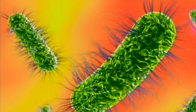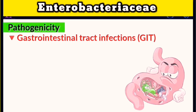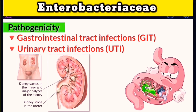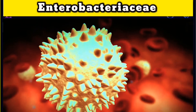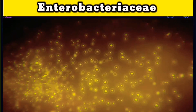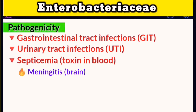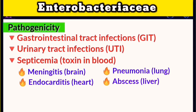Infections caused by Enterobacteriaceae mostly occur in the gastrointestinal and urinary tract and can lead to struvite stones in the kidneys or bladder when enteric bacteria such as Proteus or Klebsiella invade the urinary tract and produce urease enzymes. Other diseases occur when organisms invade the blood and travel around the body, including septicemia, endocarditis, pneumonia, or liver abscesses.